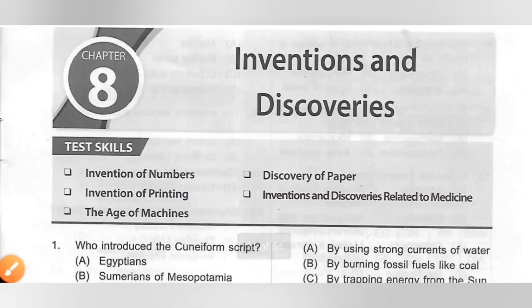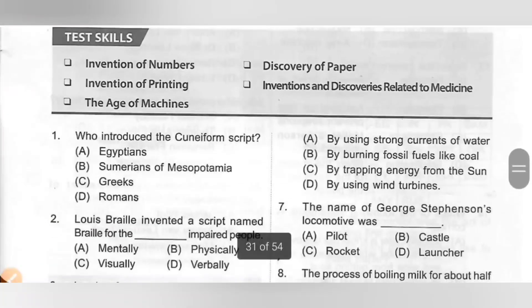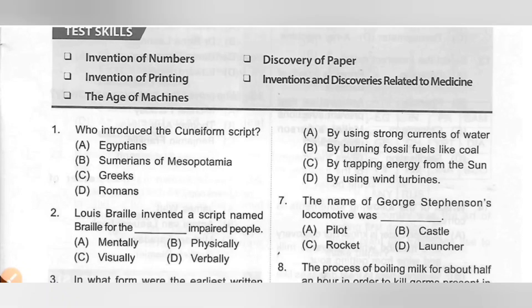Hi my dear kids, in this video we are going to see Chapter 8: Inventions and Discoveries from International Social Studies Olympiad MTG Workbook of class 5. The skills covered in this chapter are: Invention of Numbers, Discovery of Paper, Invention of Printing, Inventions and Discoveries Related to Medicine, and the Age of Machines.